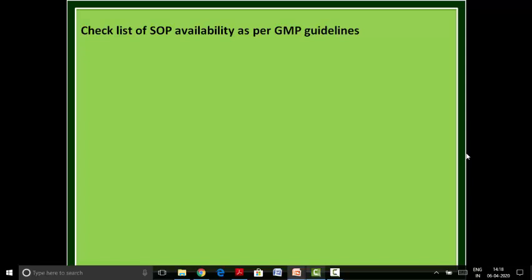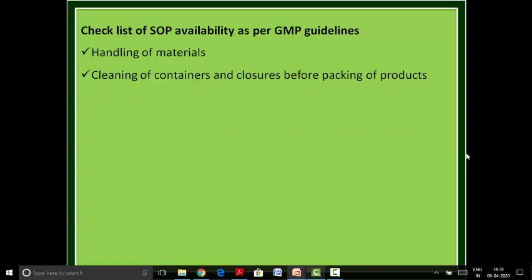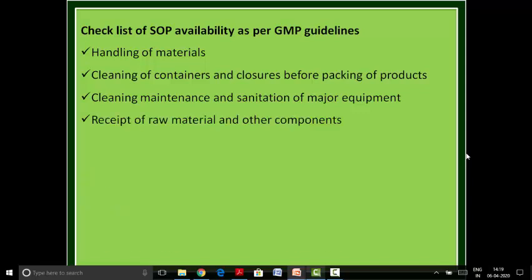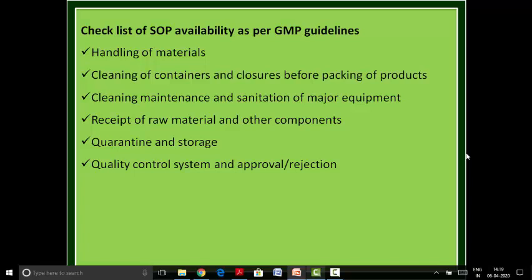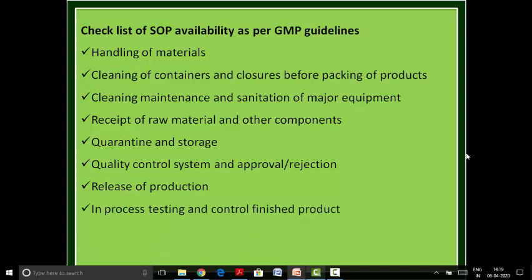Following is the checklist of SOPs as per GMP guidelines. These are the SOPs mandatory during inspection of GMP guidelines in any manufacturing or quality control premises of an ASU medicine manufacturer: Handling of Material SOP; Cleaning of containers and closures before packing of product SOP; Cleaning, maintenance, and sanitization of major equipment SOP; Receipt of raw materials and other components SOP; Quarantine and storage SOP; Quality control system and approval or rejection SOP; Release of production SOP; In-process testing and control of finished product SOP; Distribution, return goods, recalls, or complaints SOP. These are important SOPs which must be maintained on the premises of an ASU manufacturer.